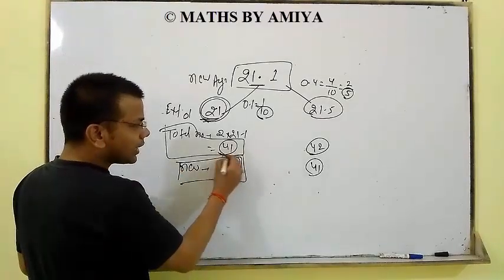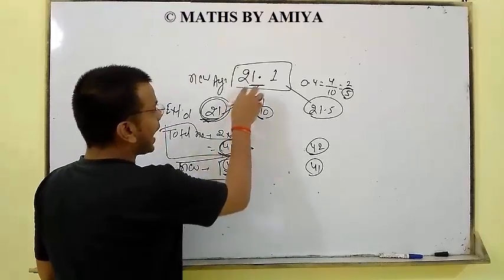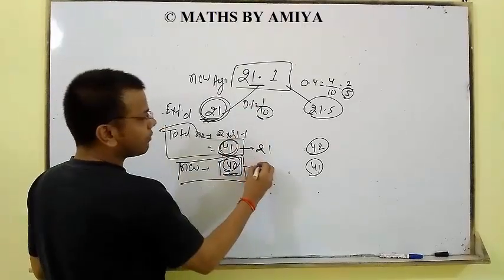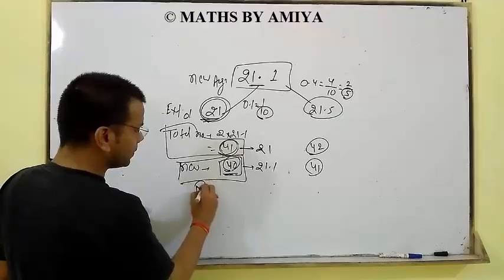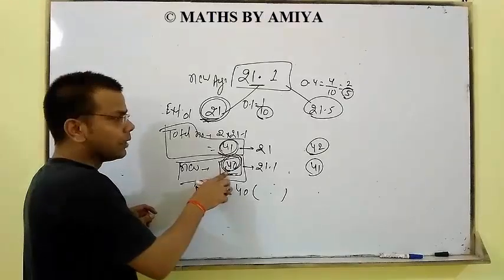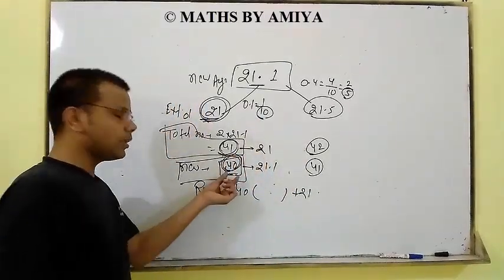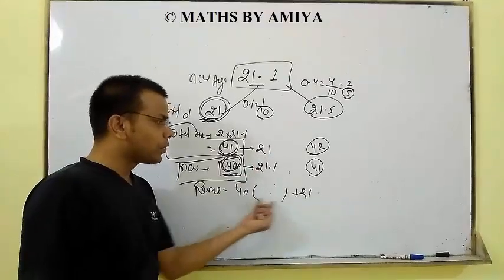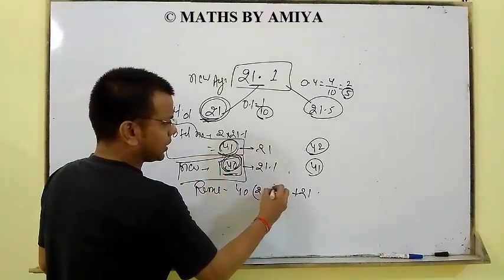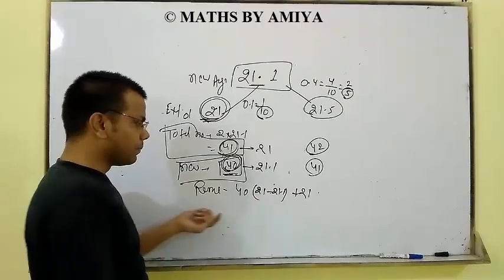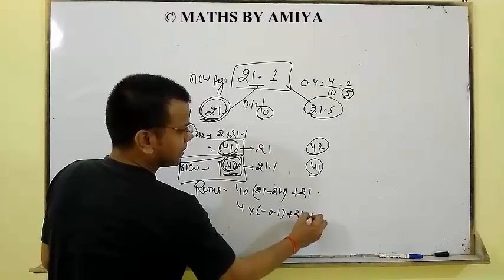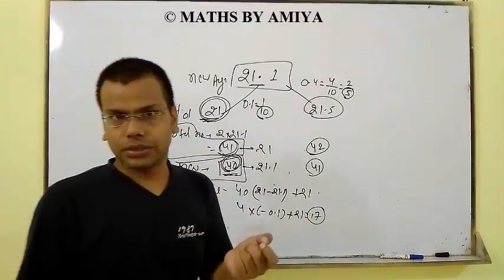With 41 total numbers, the average was 21. After removing one number, we have 40 numbers with average 21.1. Using the formula: removed number = new count × old average − old count × new average = 40 × 21 − 41 × 21.1 = 840 − 865.1 = ... that gives us the change 41 × (−0.1) + 21 = −4.1 + 21 = 17 — wait, simplified: removed number = 40 × 21 + 41 × (21 − 21.1) = 840 − 4.1 = 17. So 17 was removed.